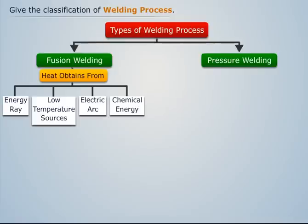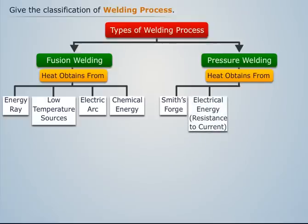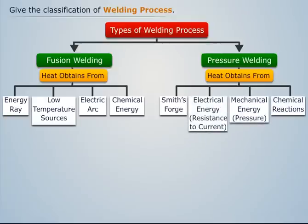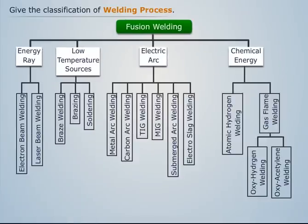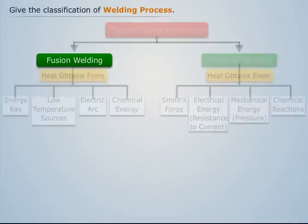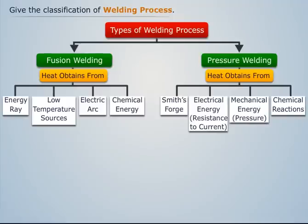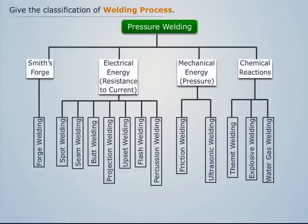Fusion welding obtains heat from energy rays, low temperature sources, electric arc, and other chemical energy. Pressure welding obtains heat from the smith's forge, electrical energy, mechanical energy, and chemical reactions. On the basis of the heat source, fusion welding and pressure welding are each further classified into sub-categories.